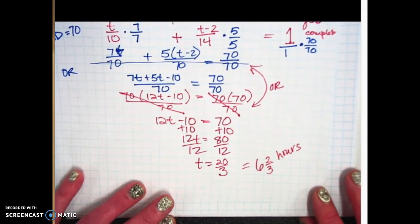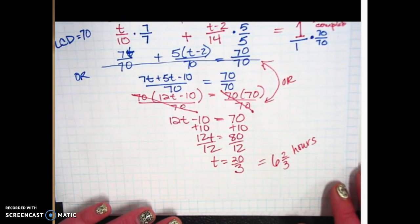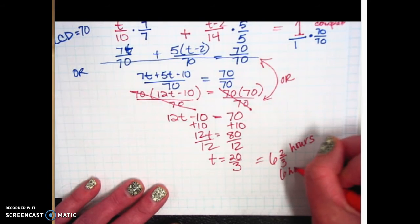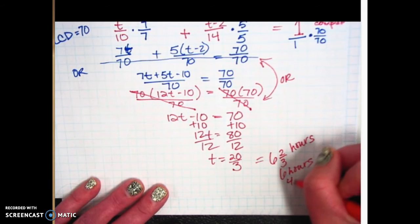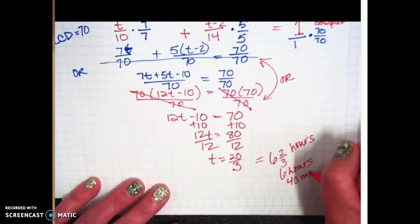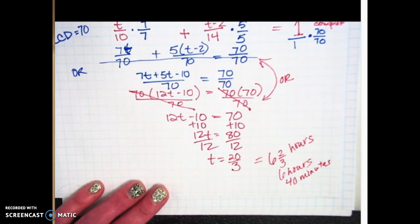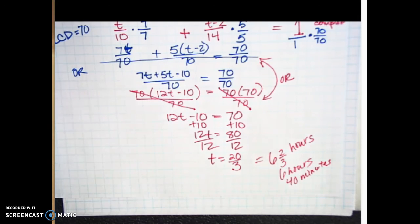So 2 thirds of an hour, how many minutes? 40 minutes. 6 hours 40 minutes. And if they give you a start time, you would need to add the 6 hours and 40 minutes to the start time. So if they told you it started at like 1:30, then you would add 6 hours and 40 minutes to 1:30, and you would say whatever that finishing time was.